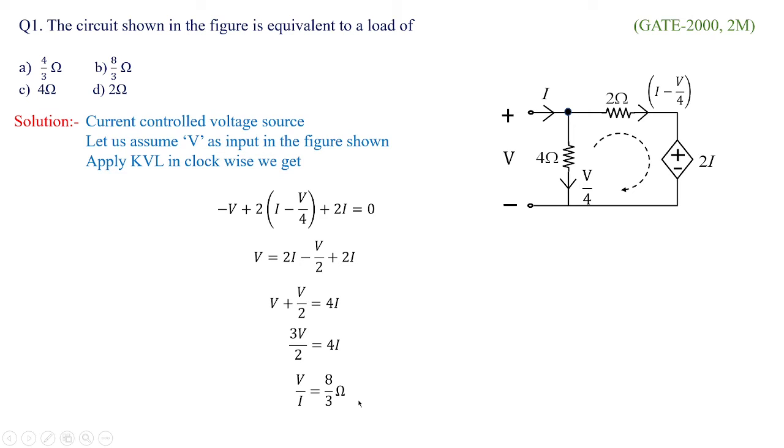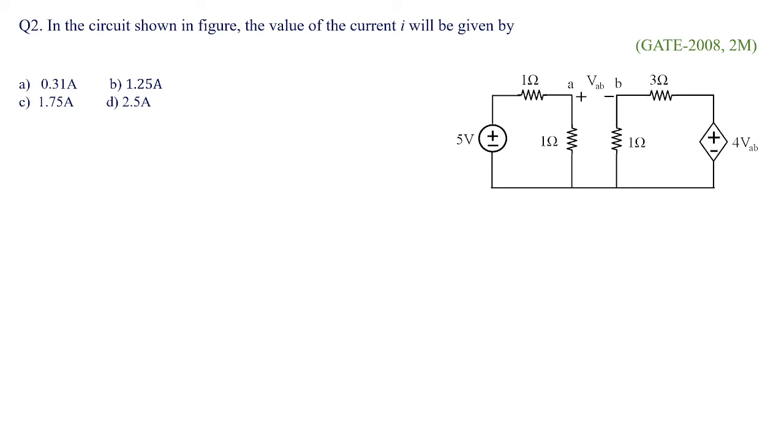V by I becomes the load value whose impedance or resistance would be equivalent to 8 by 3 ohms. This is how we need to concentrate on dependent sources and that is why it is asked for 2 marks. Generally, dependent source problems are tricky for any engineering exams, especially for electrical, electronics and instrumentation exams. You need to concentrate on the concept and see what exactly the dependent source is given and where exactly the current or voltage it is flowing. This is how the concept lies for dependent source problems.